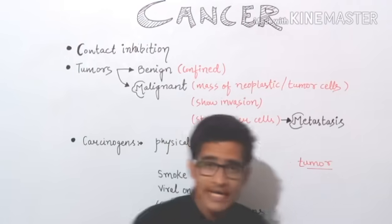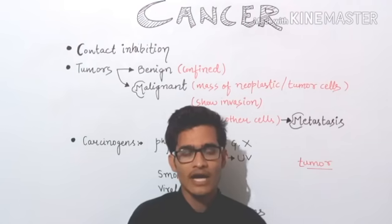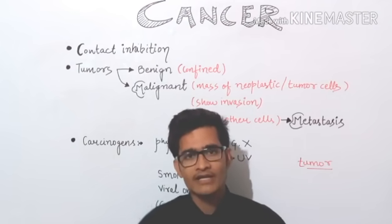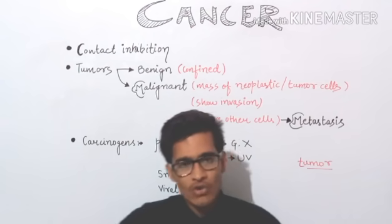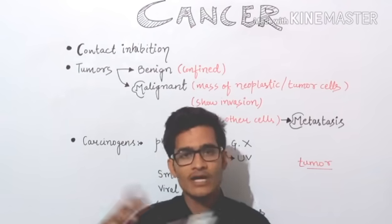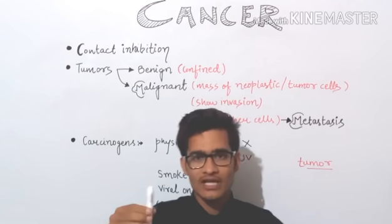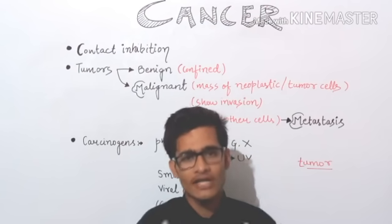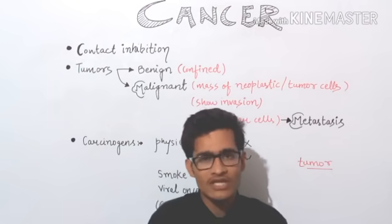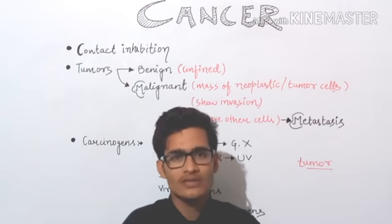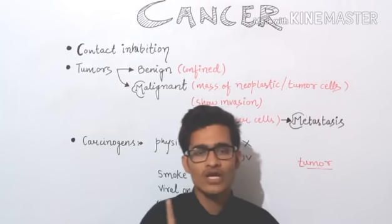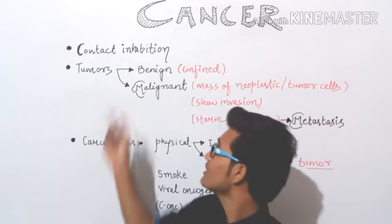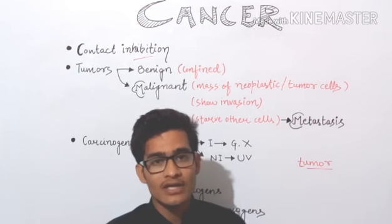Now let's talk about contact inhibition. For example, I am a cell and I start growing. When two cells have grown enough, their walls connect with each other. They are now large enough to get in contact. They will show some signals indicating that enough growth has occurred, and you cannot grow further. So this particular contact will show inhibitory signals which will inhibit further growth.